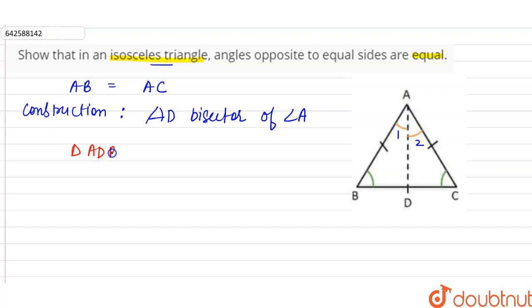So now if we talk about the smaller triangles, triangle ADB and triangle ADC. In this, we can say that AD is equal to AD, reason common, this is common.